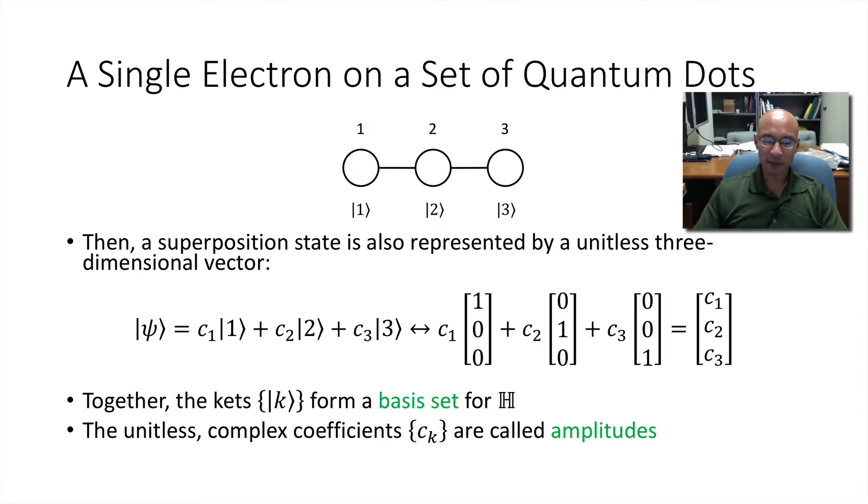So together, these basis states, kets one, two, and three form a basis set for H. By basis, we mean that we can take arbitrary summations of K and we can form any psi within that Hilbert space.